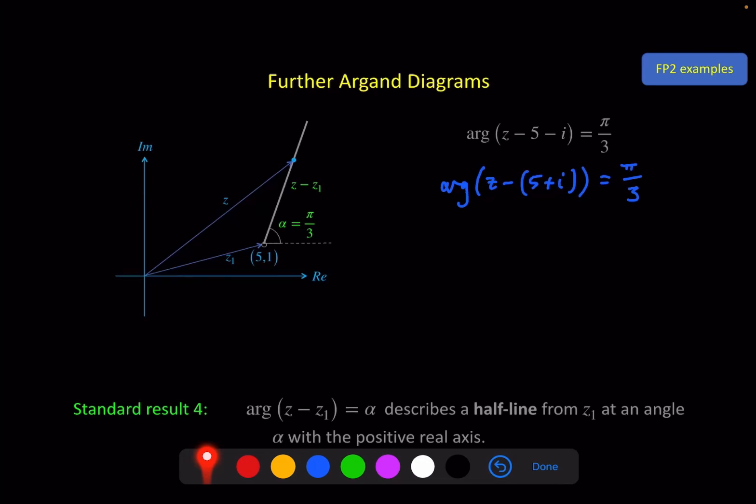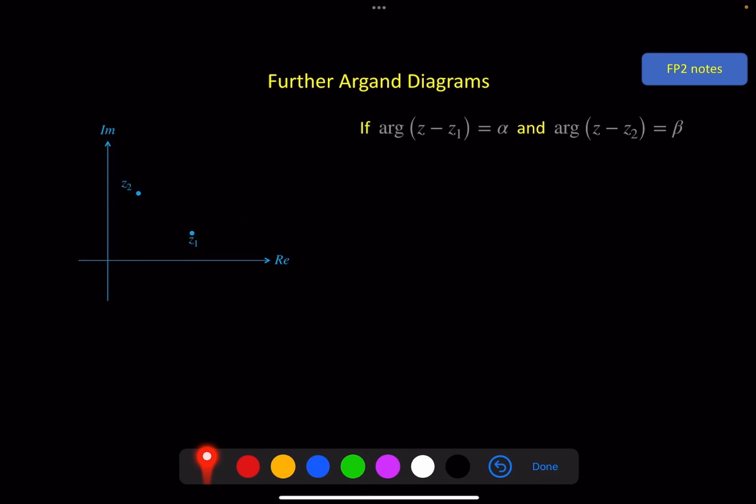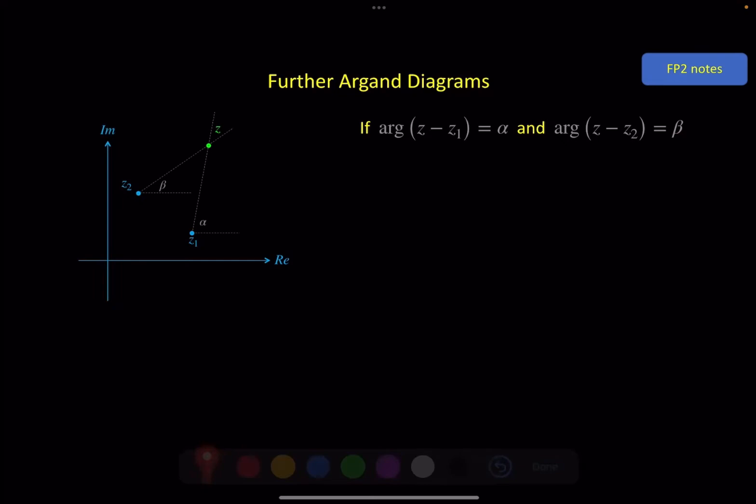Fifth and final standard result is a little bit more involved. We take two of these to begin with. So the argument of z minus z1 is equal to alpha, so that's just what we had on the previous screen. And then the argument of z minus z2 is equal to beta, so that's the second one. Same z, variable, different fixed point, and a different angle. So if we put those two on our diagram, z here is variable, and it's where these two cross, because both of these need to be true at the same time.